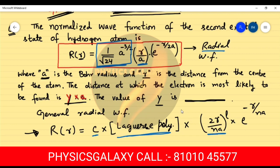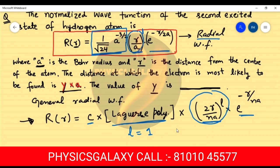Comparing the power of (r/a) factor: the power is 1 in the given wave function, which clearly means l = 1. Next, comparing the exponential terms: the given function has e^(-r/2a) and the general form has e^(-r/na), so clearly n = 2. Therefore l = 1 and n = 2, which is consistent with the electron being in the second excited state, specifically the 2p state of hydrogen.